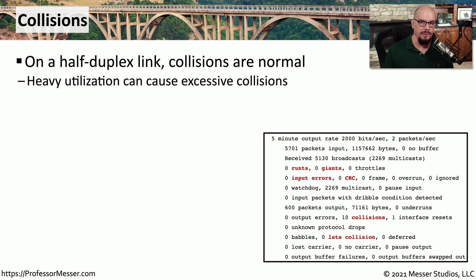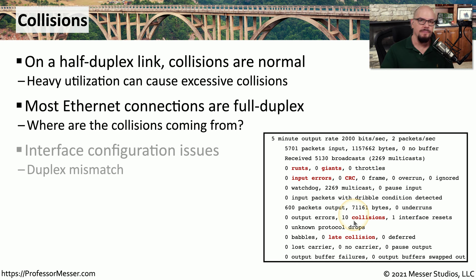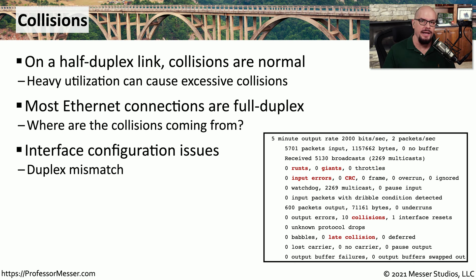If you have a lot of people communicating at the same time, you will see an increasing number of collisions on the network, and that could cause performance problems for everyone. On today's networks, though, most devices are connected at full-duplex, which means collisions should not be occurring at all. So if collisions are increasing, you may want to look at device configuration — sometimes it's as simple as one device set for full-duplex and another set for half-duplex, and collisions are created because of that half-duplex connection.